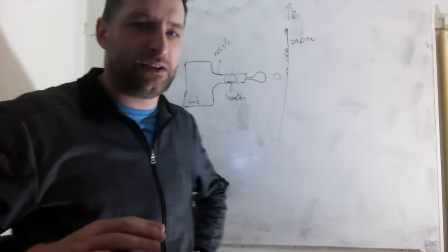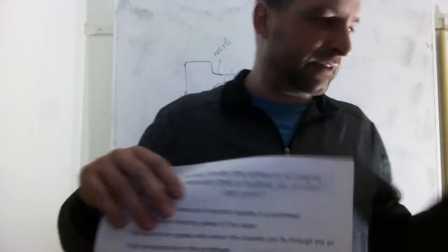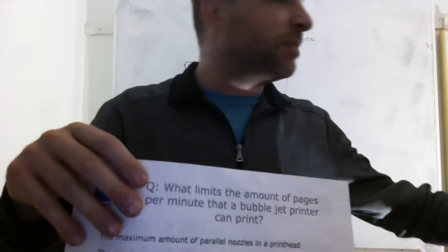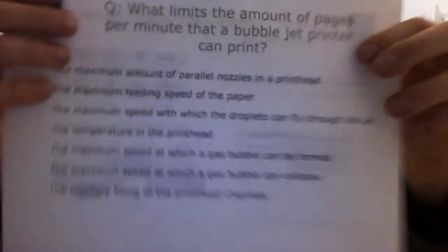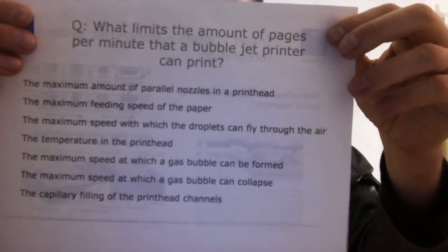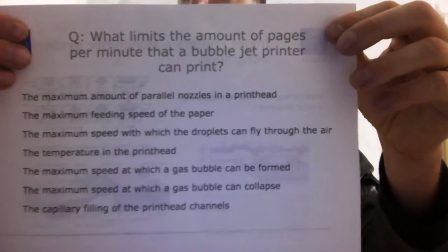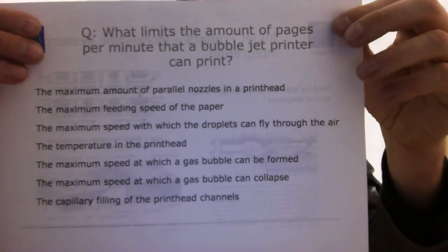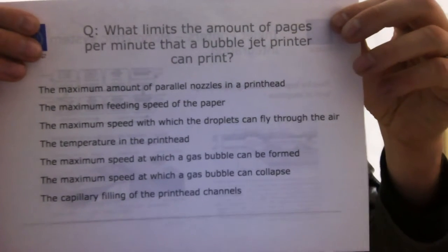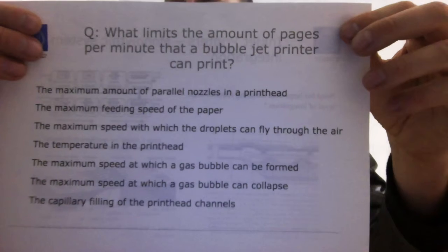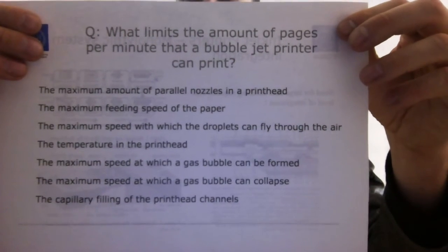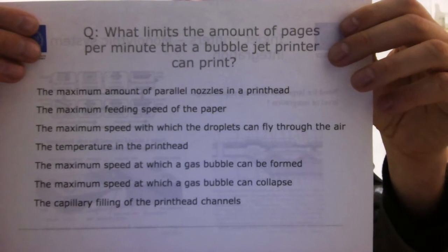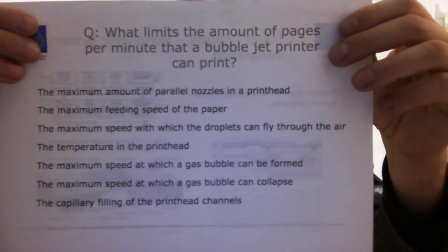Time for a quiz about this bubble jet principle that I have just shown here. It's also shown in your PDF file. So you can find it there. But my quiz question is the following. Something is going to limit, some of the parameters are going to limit how fast I can print here. And my question is for you to think, which of these points will be actually limiting the amount of pages per minute that a bubble jet printer can print? Is it the maximum amount of parallel nozzles? Or is it the maximum feed rate of the paper? Or is it the maximum speed at which droplets can fly to the air? Or is it the temperature in the print head? Or the maximum speed at which a gas bubble can be formed? Or the maximum speed at which a gas bubble can collapse? Or the capillary filling of the print head channels? After firing, it needs to refill the channel. So which of these do you think will be the limiting factor? Think about it and click the ones that you think are correct.